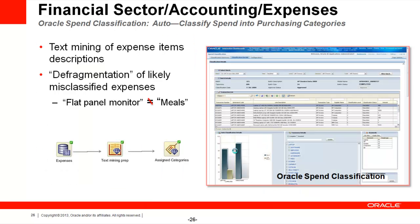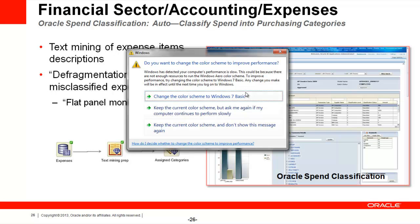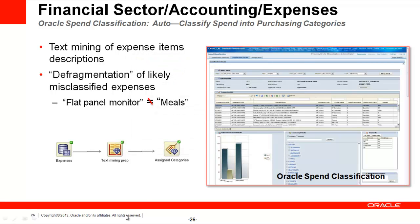Here's another similar application: spend classification. Based on your purchases — say, a flat panel monitor filed away with a text string that says 'flat panel monitor' but put in the bucket of 'meals' — we say we don't usually see the words 'monitor,' 'flat,' and 'panel' in the bucket labeled 'meals.' So we use text mining to flag it as something that probably is misfiled. It could be fraud or it could just be a mistake.